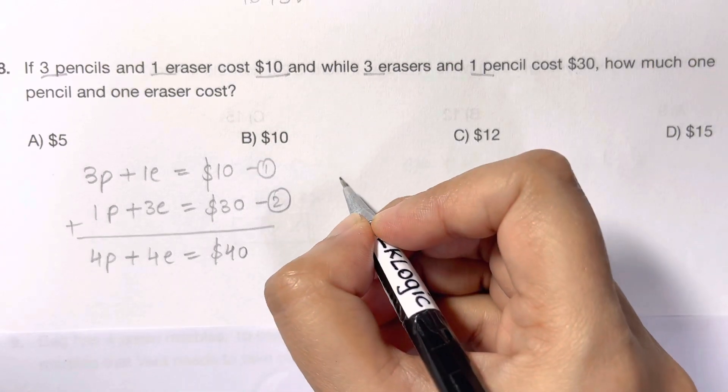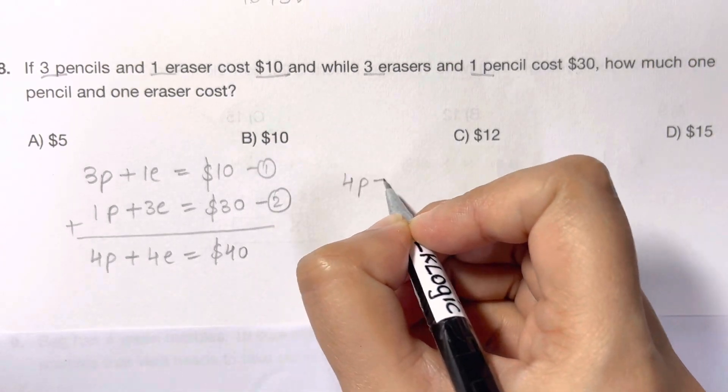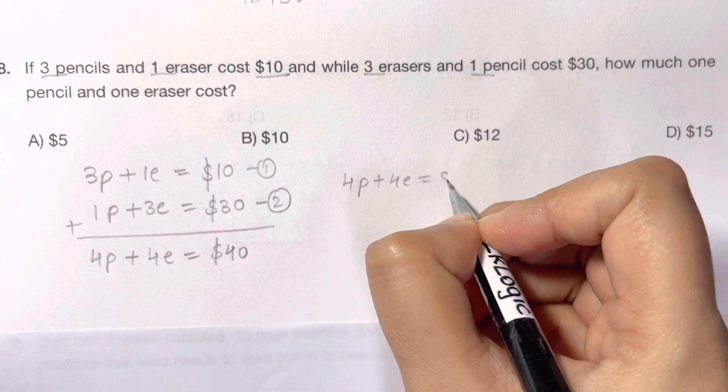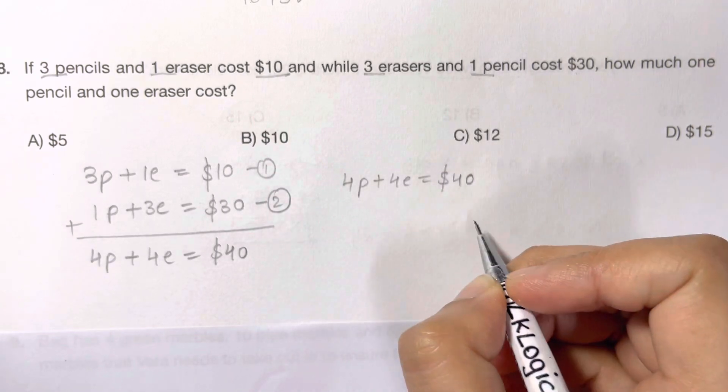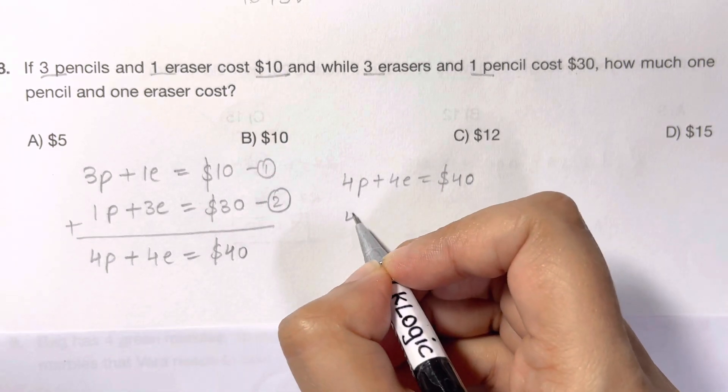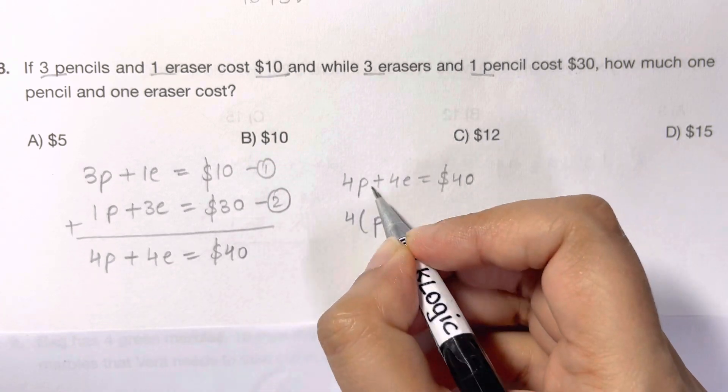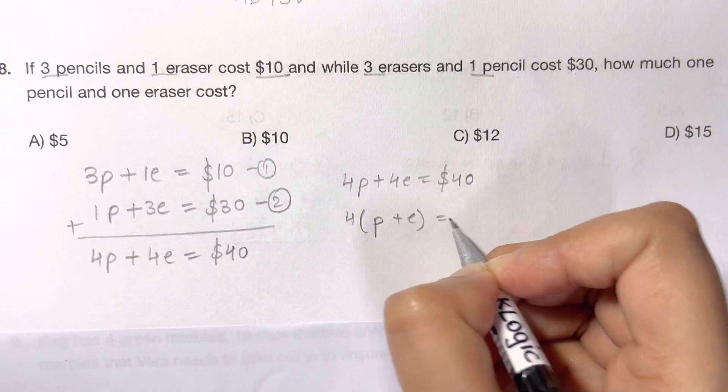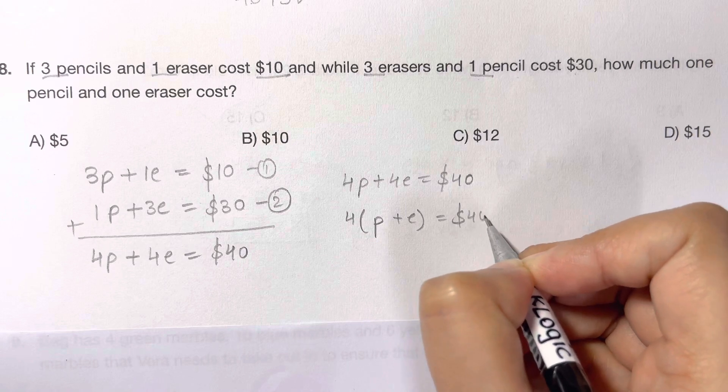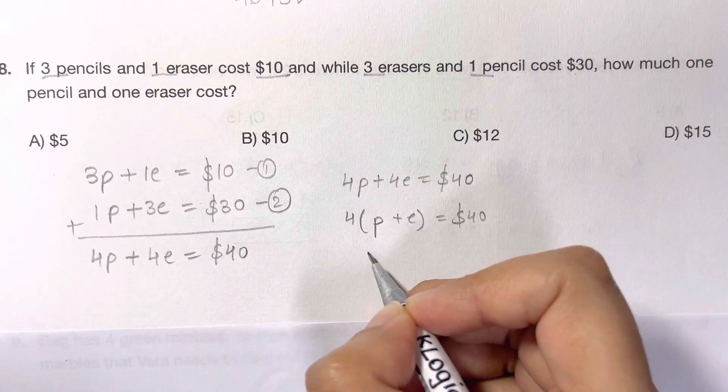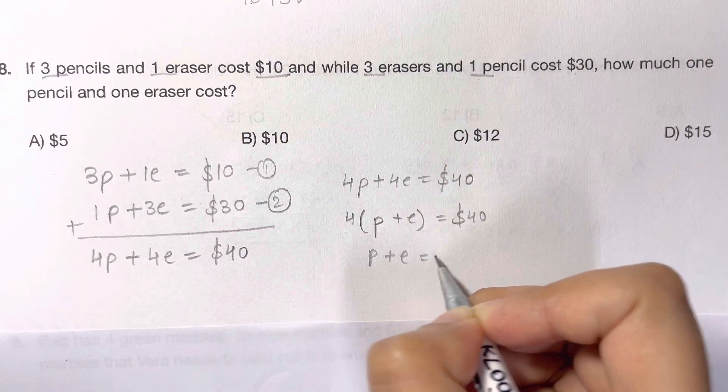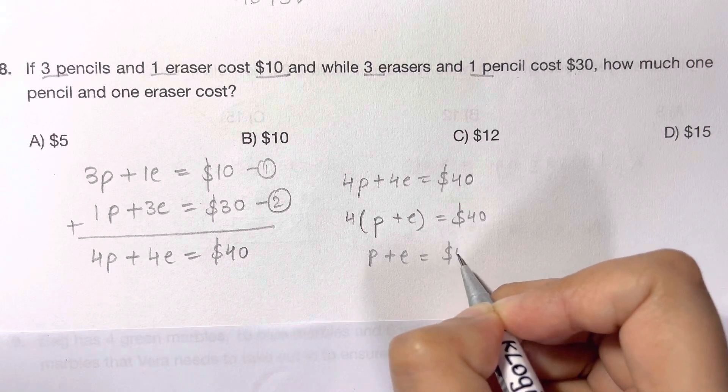Four pencils plus four erasers equals forty dollars. Let's take out four as a common factor: four times pencil plus eraser equals forty dollars. Taking the four to the side, you have one pencil plus one eraser equals forty divided by four.